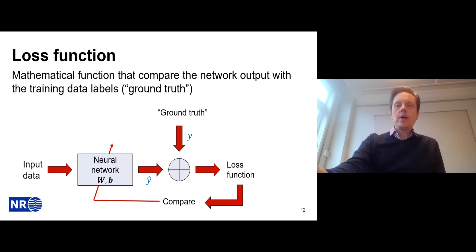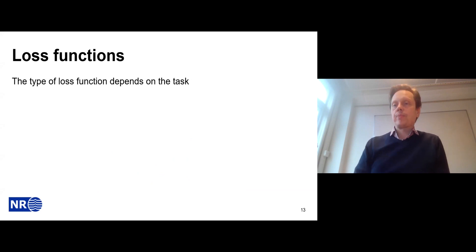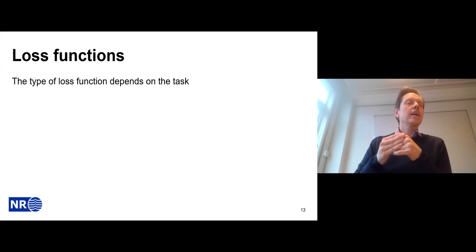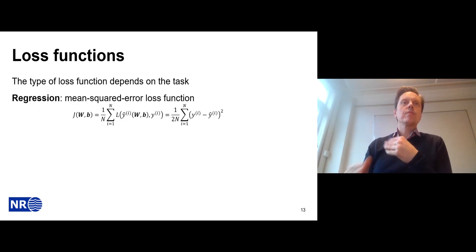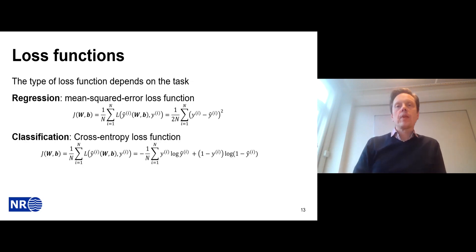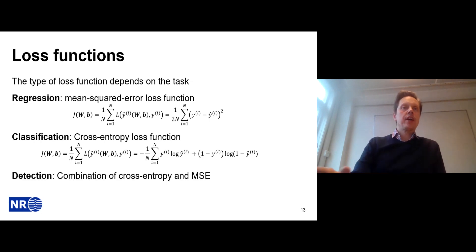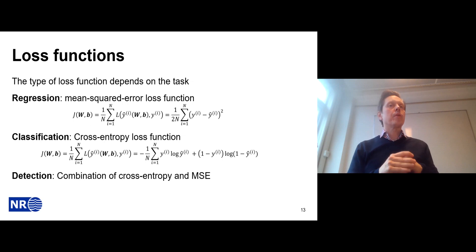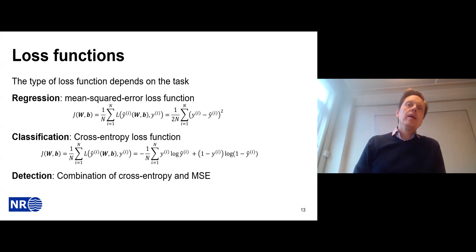In earth observation, the loss function depends on the task. For regression, such as parameter retrieval, we apply mean squared error. For classification, we often use cross-entropy loss. For object detection, we use a combination: cross-entropy for determining the class of objects, and mean squared error for the regression of bounding boxes.